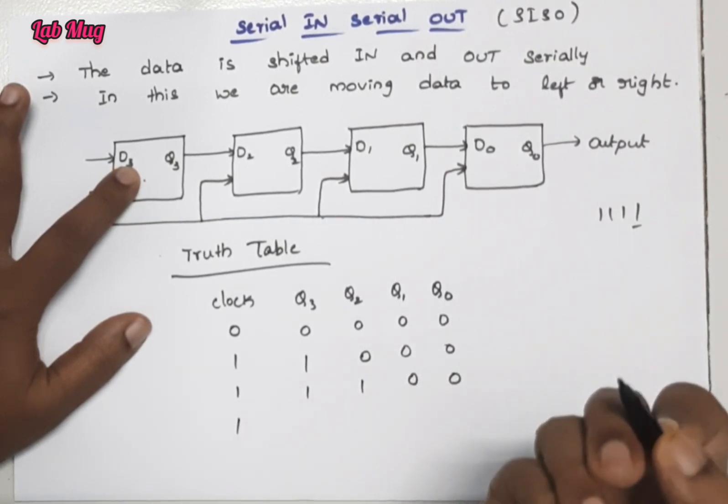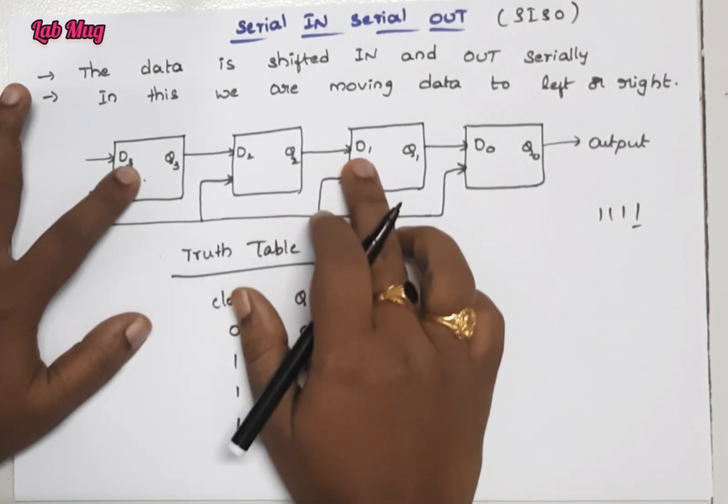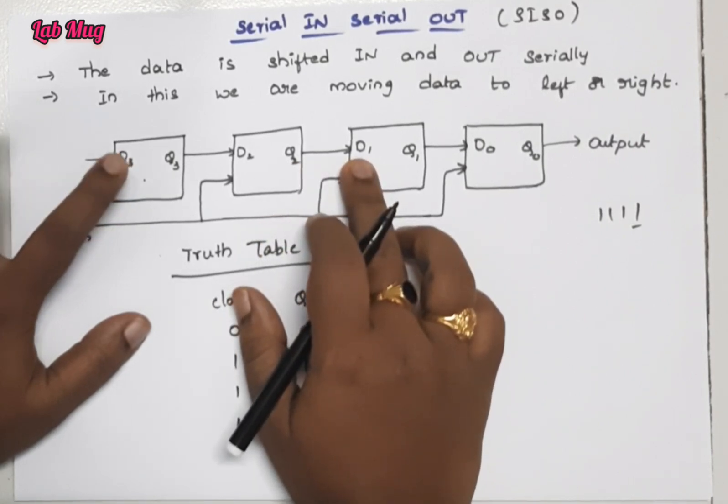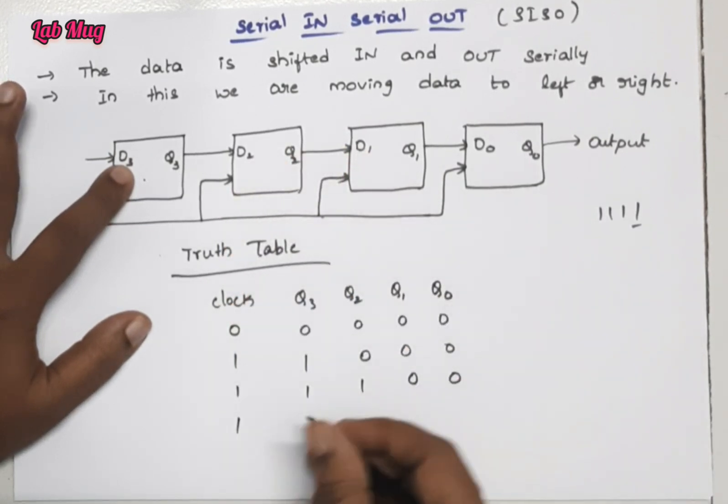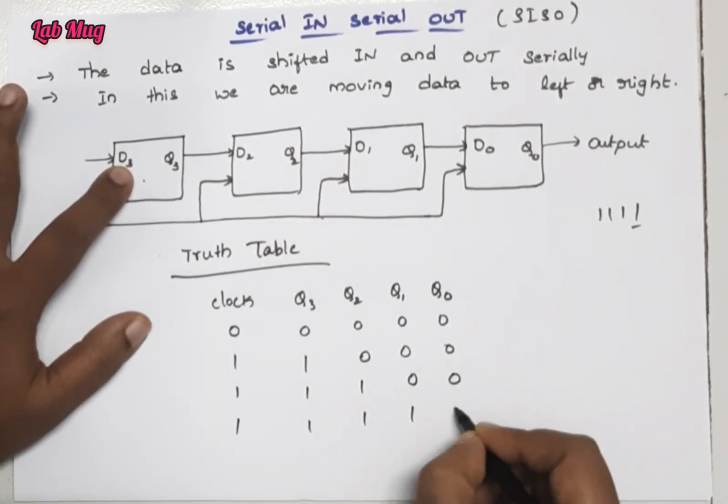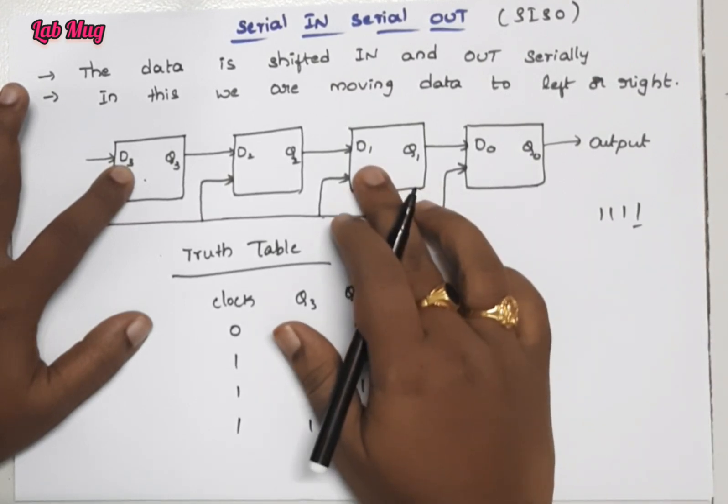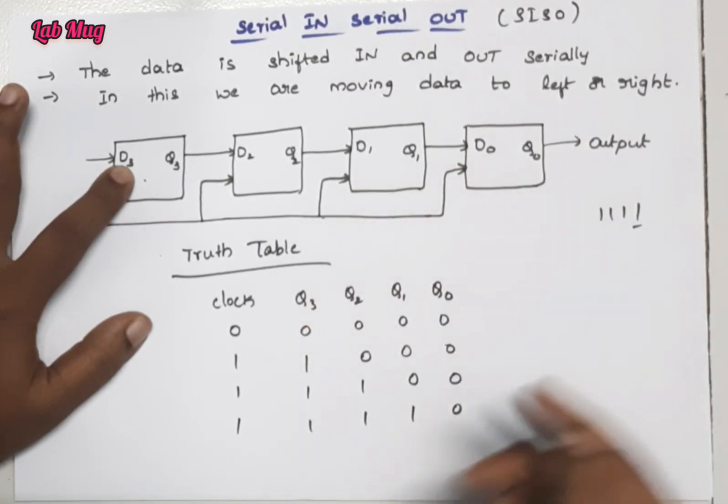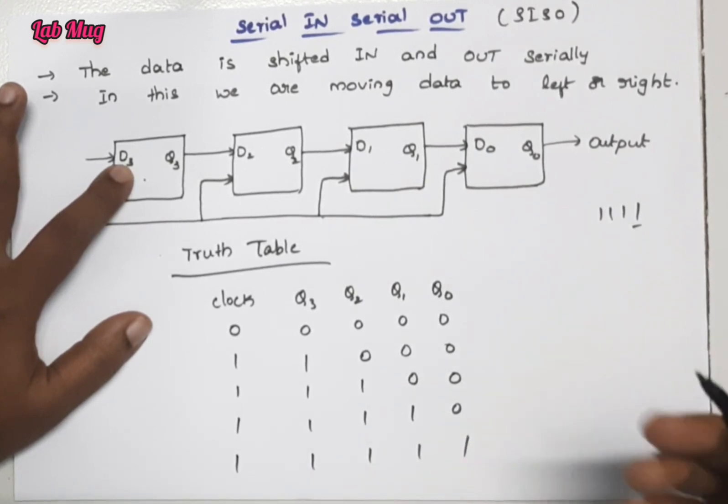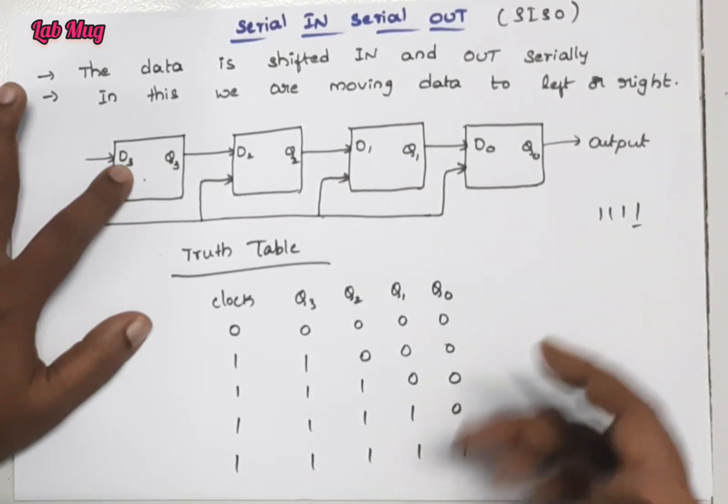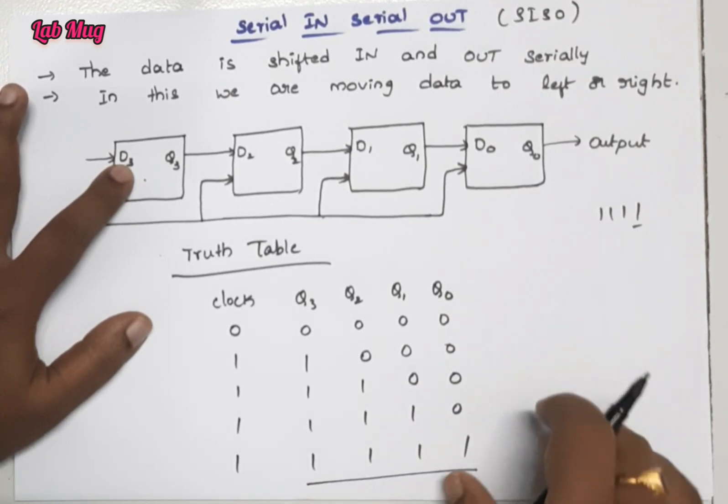Again the clock pulse is one. Next, Q2 is passing the value one to D1. Again D3 is one, D2 is one, and D1 is one. So that is one one one zero. Again the D1 value is passing to Q0.